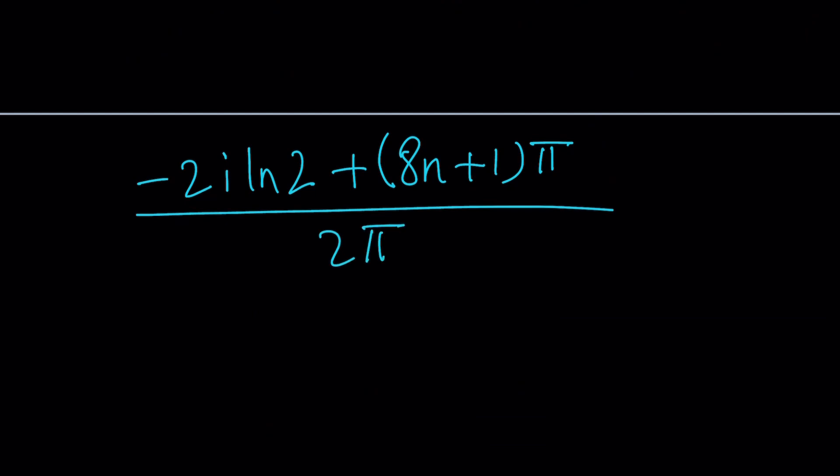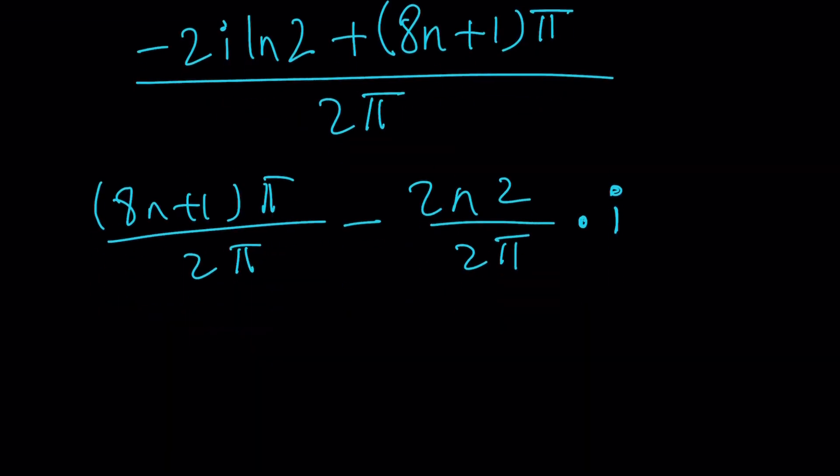Great. So this should be the answer. How can I simplify this a little bit? Well, you can kind of separate the real and imaginary parts if you want. So you can kind of write it like 8n plus 1 pi divided by 2 pi and then minus 2 ln 2 over 2 pi multiplied by i. And now here, notice that you can basically simplify these two pi's. 8n divided by 2 is going to be 4n plus 1 half.